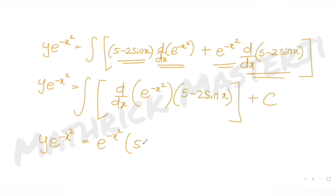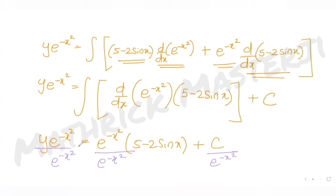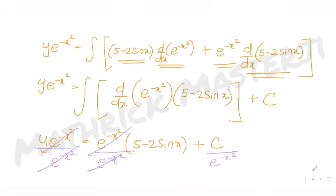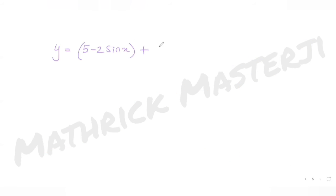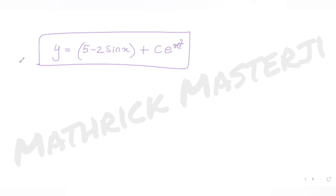This gives y·e^(−x²) = e^(−x²)·(5 − 2sin(x)) + C. Dividing both sides by e^(−x²), the e^(−x²) cancels on the right and e^(−x²) in the denominator becomes e^(x²), so the general solution is: y = 5 − 2sin(x) + C·e^(x²).